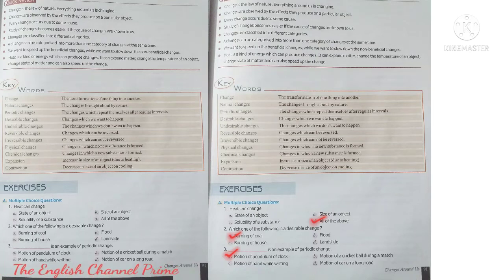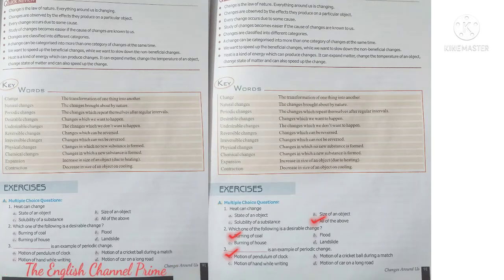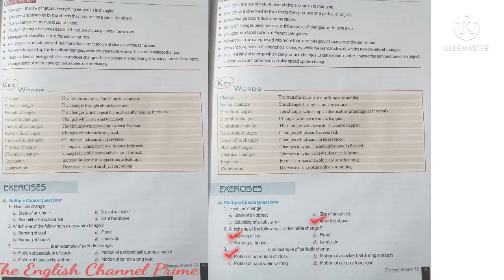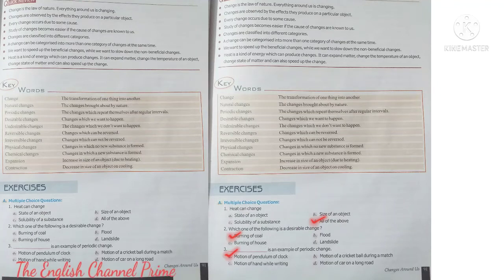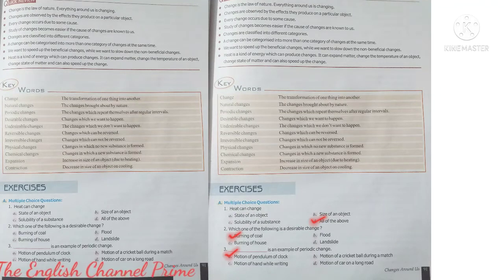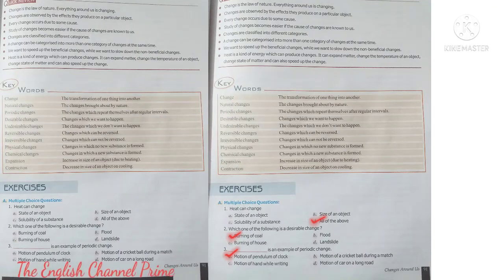For example, when you are burning butter — when butter comes in contact with heat, you can see the butter will melt. That means it changes from solid physical state to liquid state, and the size will also change. The solubility also changes. So the answer is all of the above.